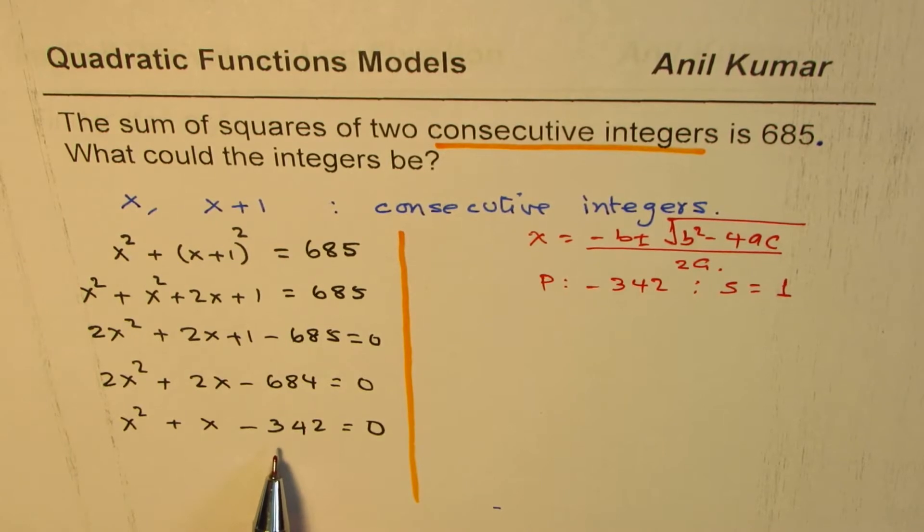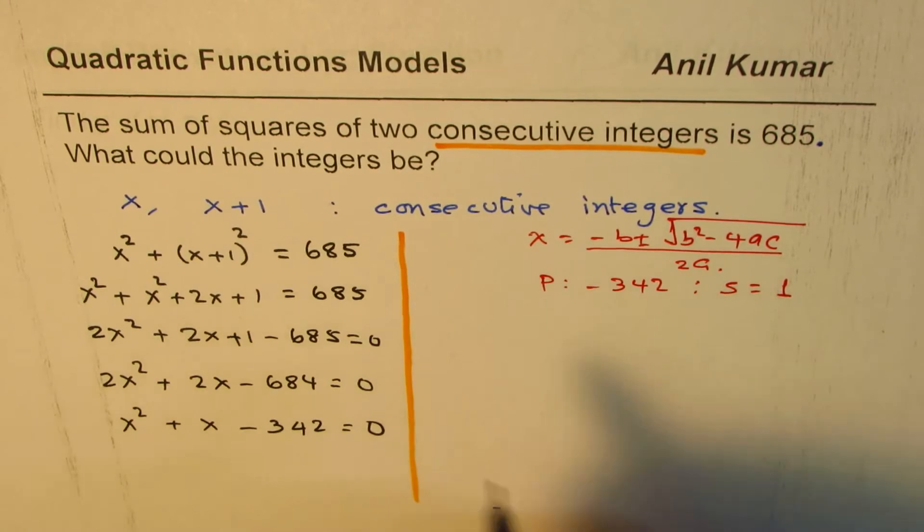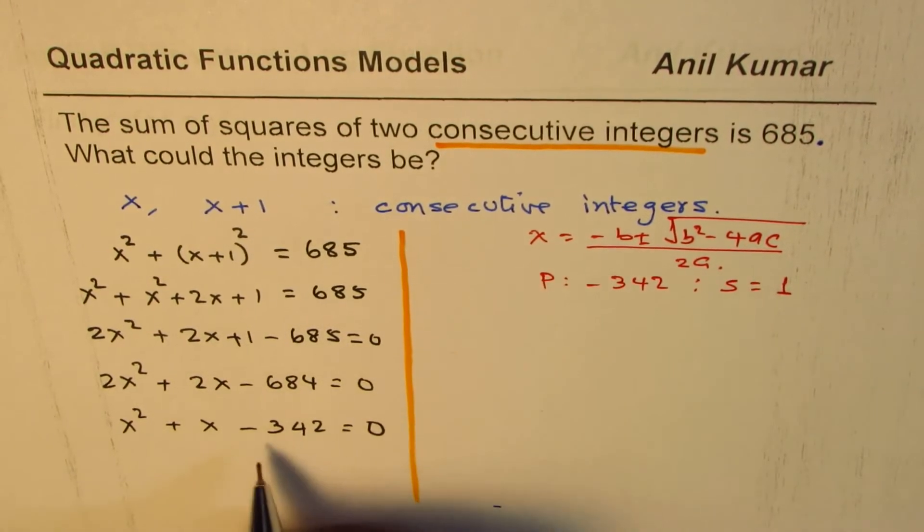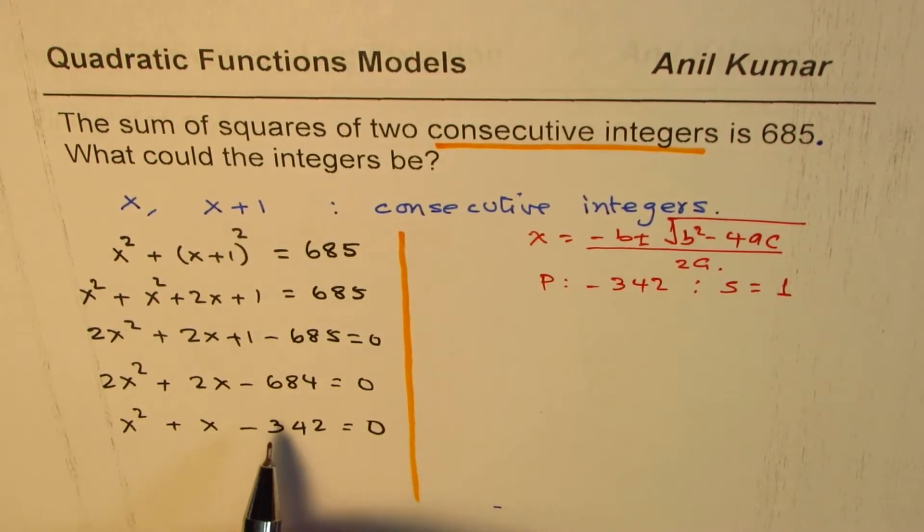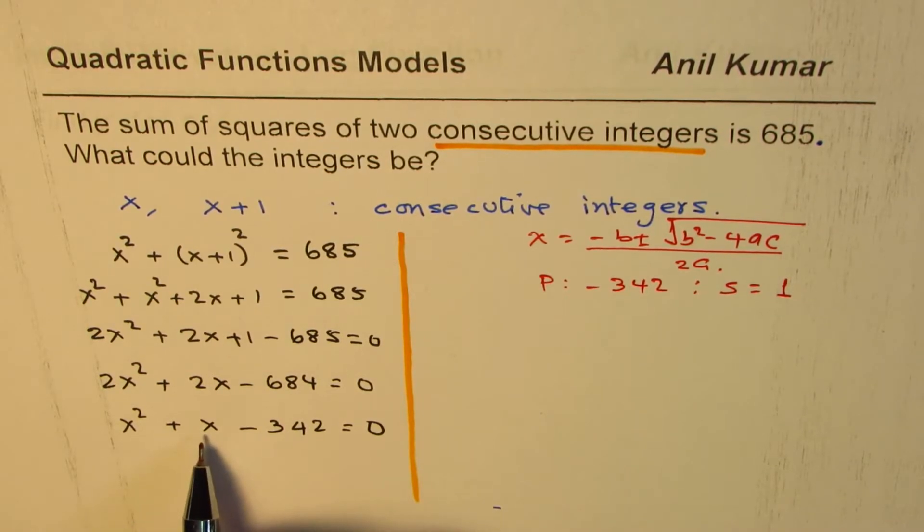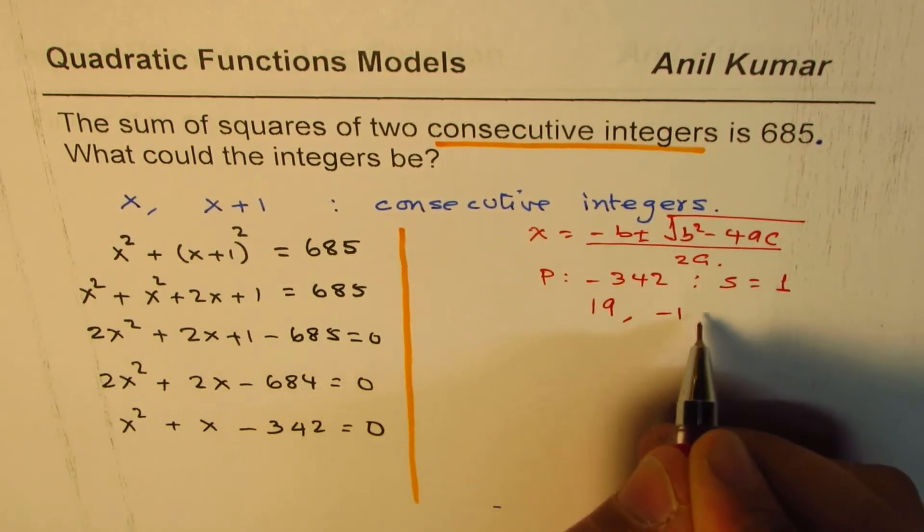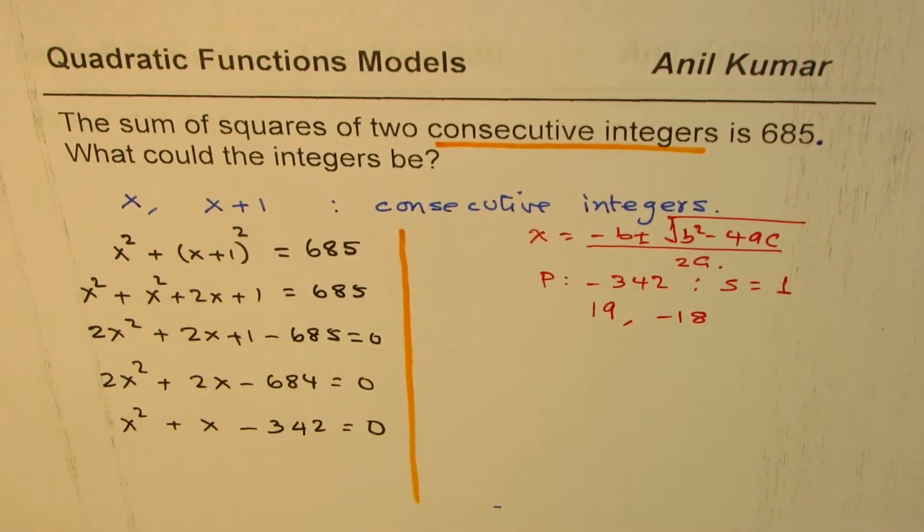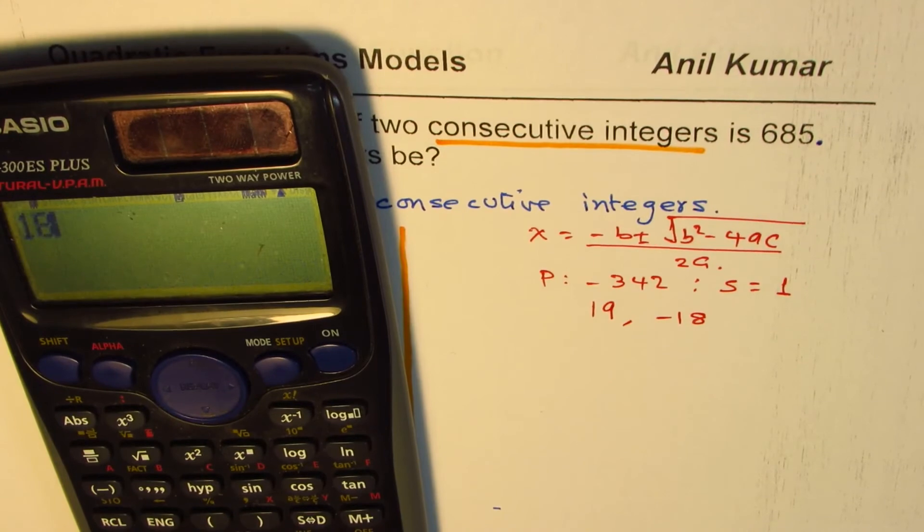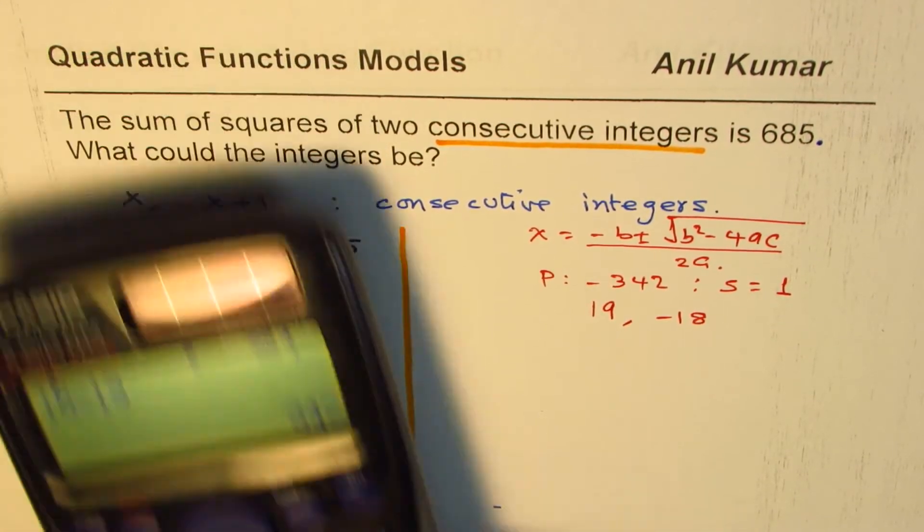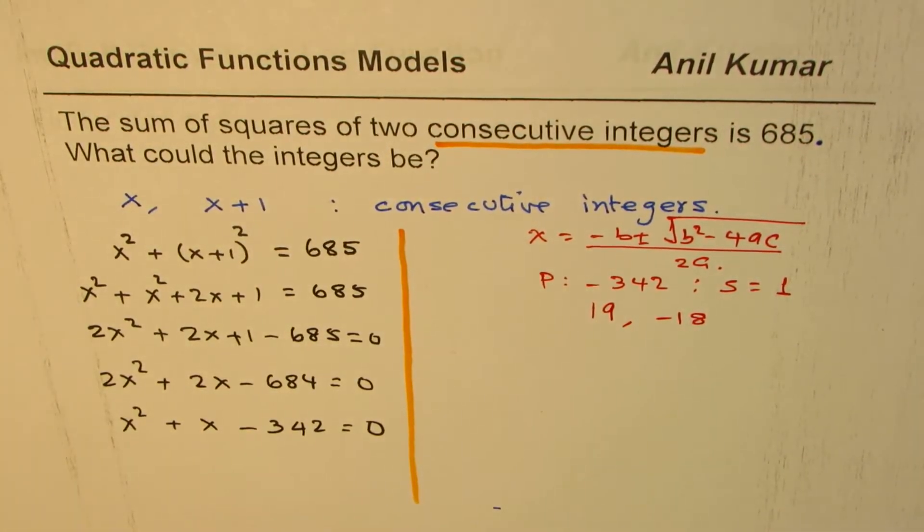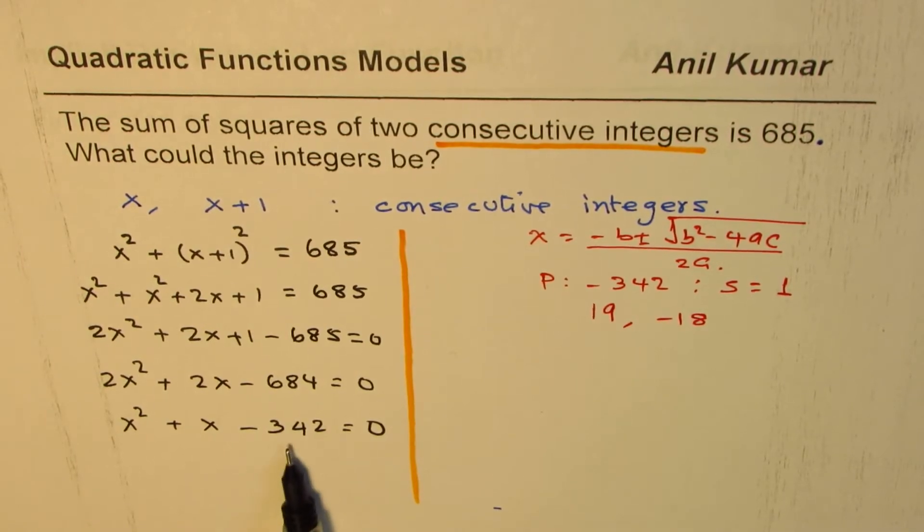I get 18.5, so you're looking for two numbers which are kind of consecutive integers. 18 and 19 works for you because then you get 18 times 19 is 342. Now one of them has to be negative, the positive one is bigger number, so we'll do 19 and we'll do minus 18. Let's multiply: 18 times 19 is 342. Perfect.